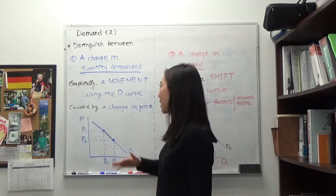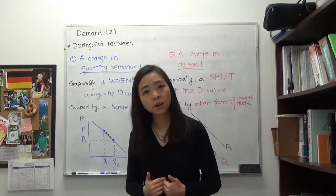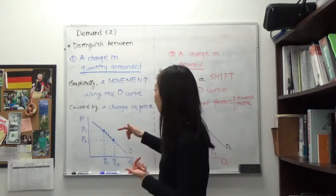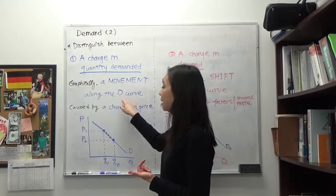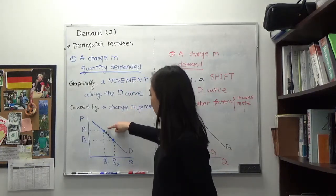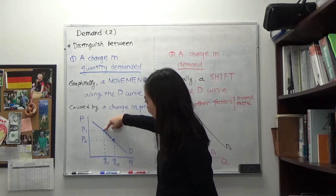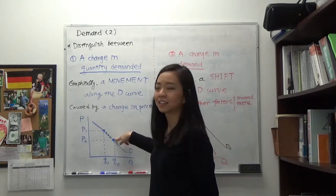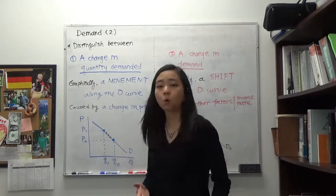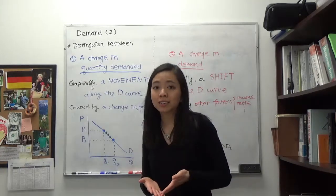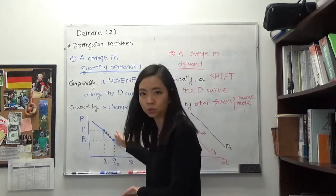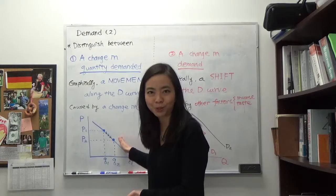And graphically, when we say there is a change in quantity demanded, we're going to observe a movement along the demand curve. So we're going to move from that point to that point. That would be a change in quantity demanded, which is caused by the change in price of that good, in this example, cappuccino.